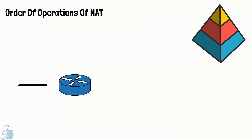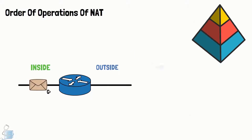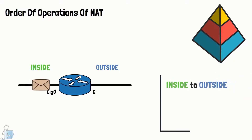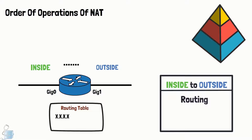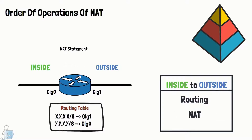Routing basically decides the outgoing interface for the IP packet. When the initial packet lands on a NAT inside interface, routing occurs first, which decides the outgoing interface. After deciding the outgoing NAT outside interface, the NAT statement is triggered corresponding to those interfaces.